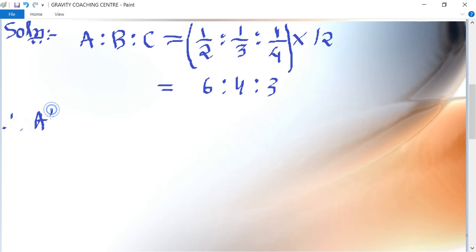Therefore A's share equals 2600 into 6 upon 13. Using the table of 13 we cancel, getting 1200 rupees.